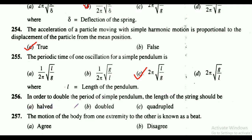Question 256: in order to double the period of a simple pendulum, the length of the string should be halved, doubled, or quadrupled? The correct answer is option C, that is quadrupled.